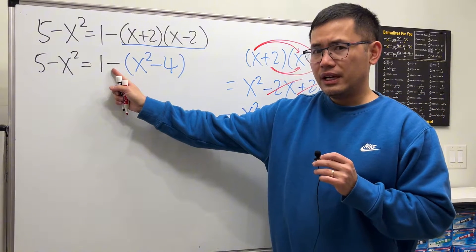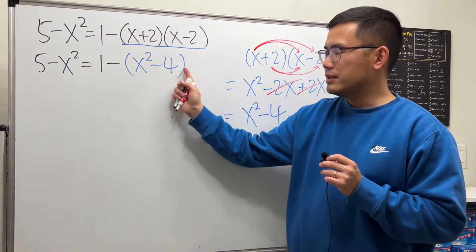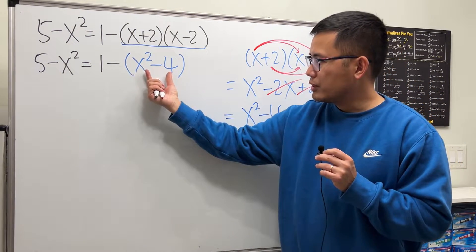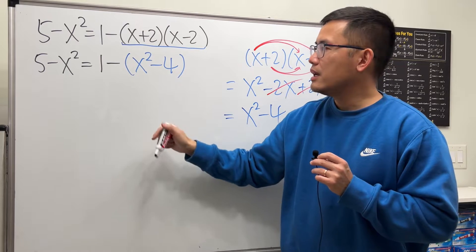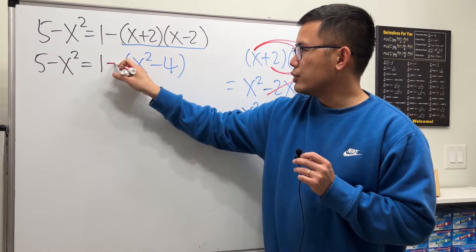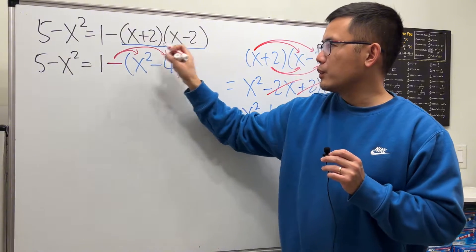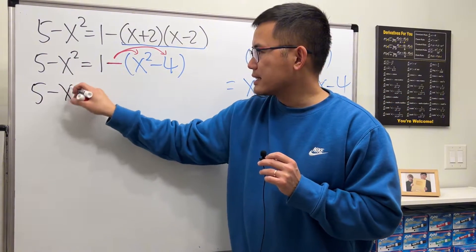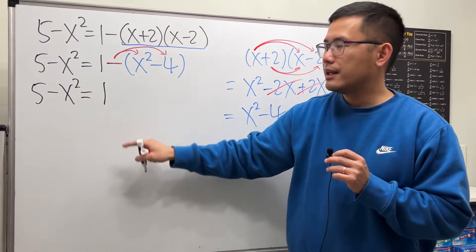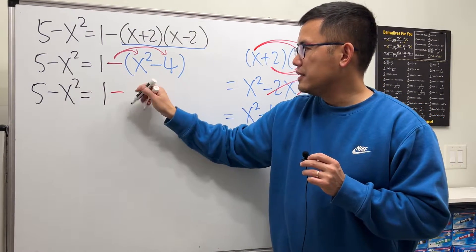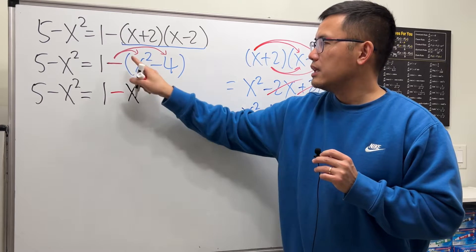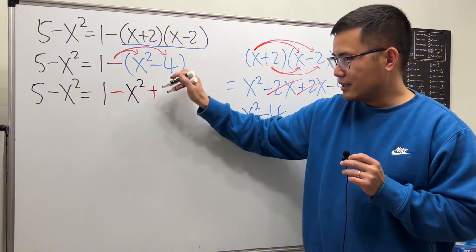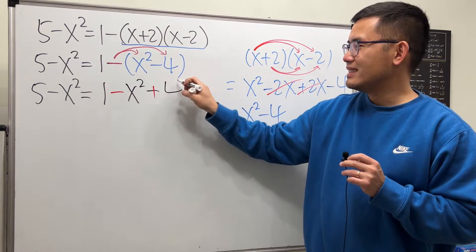Now we see that we have a negative sign, and the result x squared minus 4 must stay inside parentheses. We need to distribute this negative carefully. So we still have 5 minus x squared equals 1, then negative times x squared is negative x squared, and negative times negative 4 is positive 4.